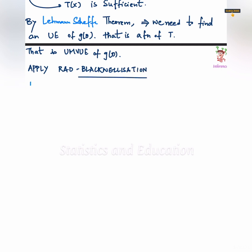So, we apply the Rao-Blackwellization method. Let's start with an arbitrary unbiased estimator of g theta, and if we are able to condition it on a sufficient and complete statistic our work is done.